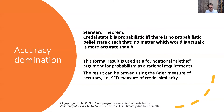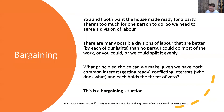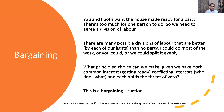Now I'm going to move to a bit of machinery two, which is bargaining theory. So just to have a case on the table: you and I want to both get the house ready for a party. There's too much for one person to do, so we need to agree on some division of labor. There are many possible divisions of labor that are better by each of our lights than not having a party at all. I could do most of the work, you could do most of the work, we could split it evenly. No matter how it gets done, we want the party. But how do we divide labor? What principle choice can we make here, given we've got both common interests and conflicting interests within that?